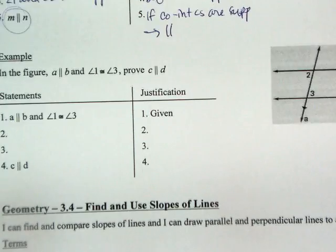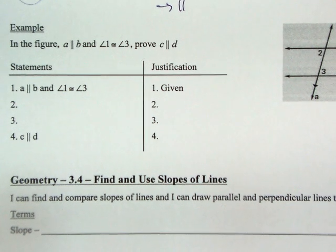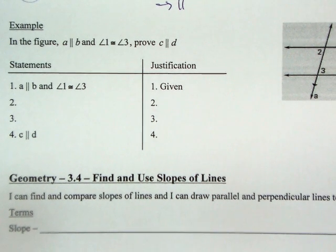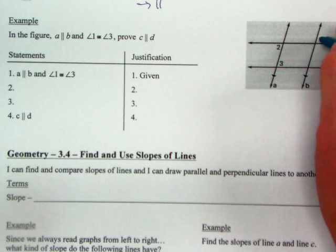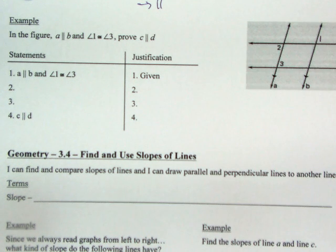So it's either going to be co-interior, alternate interior, alternate exterior, or corresponding. Last one. And this one's missing the angle 1, which belongs right there, if I remember right. I think that's right. We're going to find out in a second.